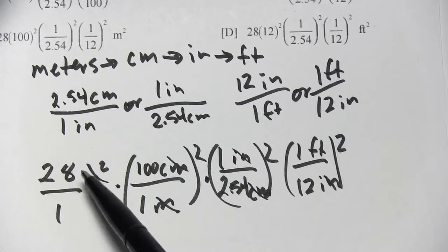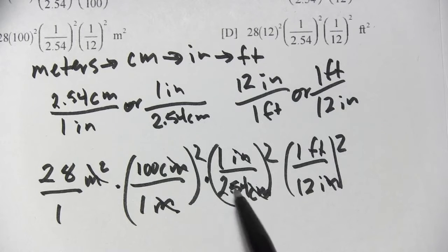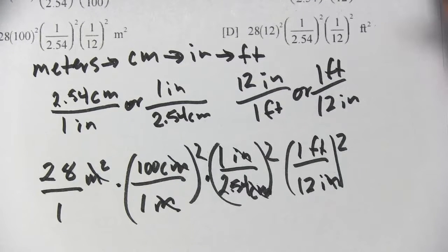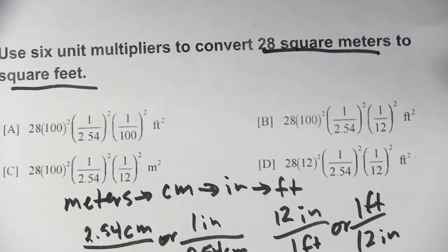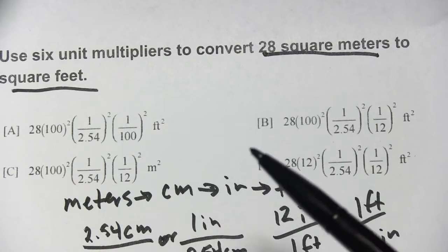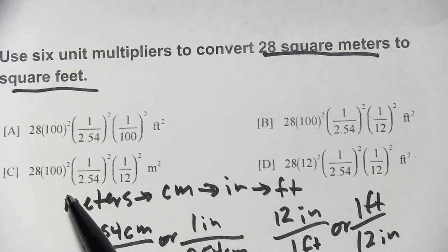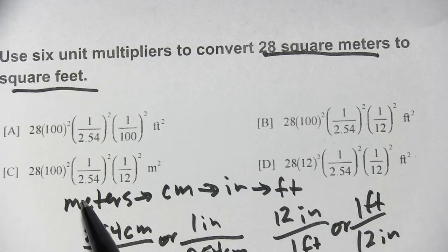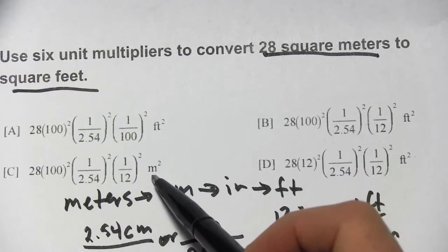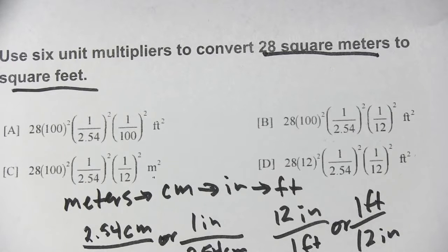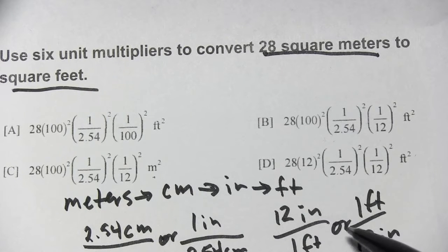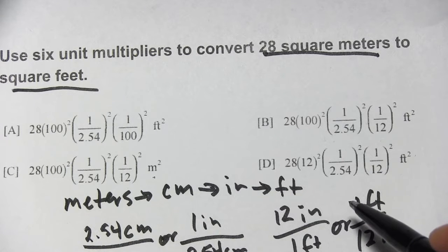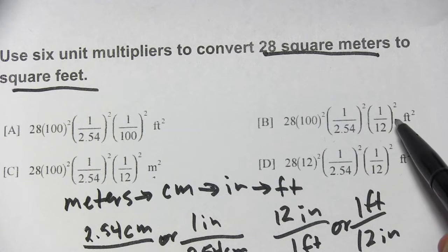So this problem reads 28 times 100 times 1 over 2.54 times 1 over 12. So let's see. So that looks, well, that almost looks right. Except that it ends up in meters squared. And I think we ended up in feet squared. Yeah, this one looks right.